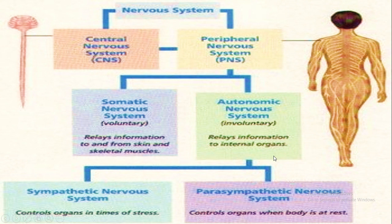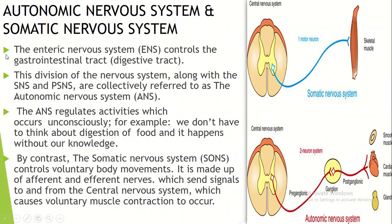The Autonomic Nervous System includes the Sympathetic Nervous System and the Parasympathetic Nervous System, as well as the Enteric Nervous System, which controls the digestive tract. The Autonomic Nervous System regulates activities which occur unconsciously.